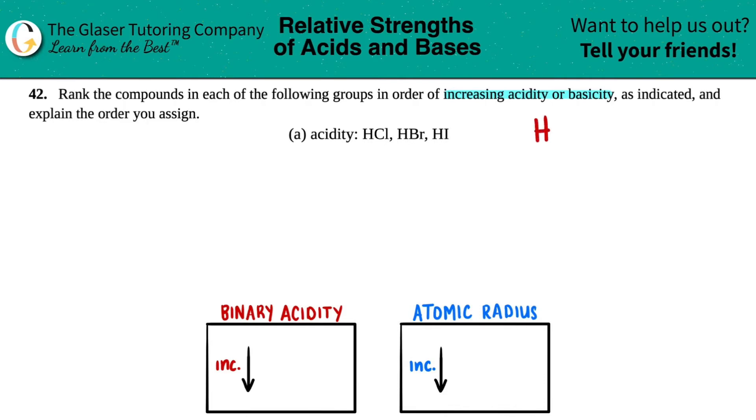They all have a hydrogen and then a random element next door. Those are binary acids. Binary means two. In chemistry 'bi' means two. So in a binary acid you're only allowed to have two total elements: hydrogen and chlorine, hydrogen and bromine, hydrogen and iodine.